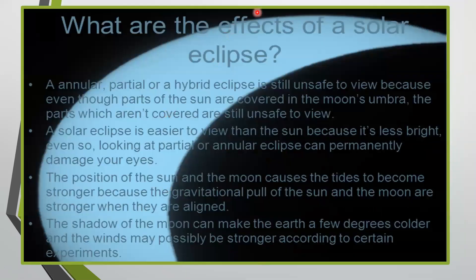Now what are the effects of a solar eclipse? An annular, partial, or hybrid eclipse is still unsafe to view because even though parts of the sun are covered in the moon's umbra, the parts which aren't covered are still unsafe to view.